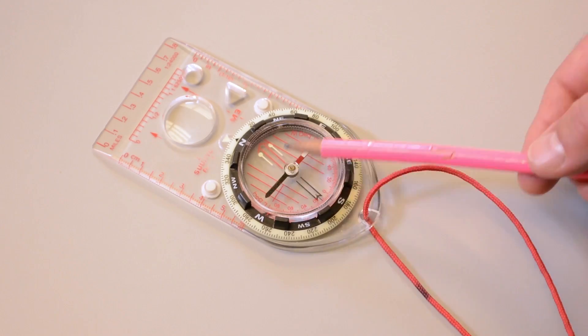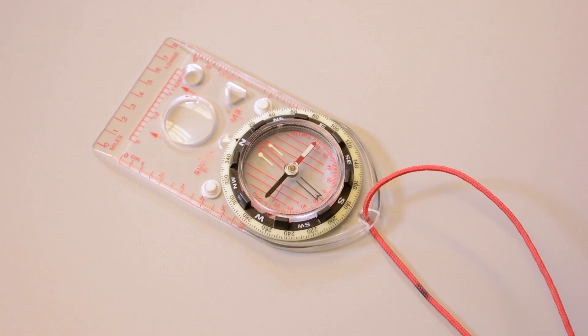Inside the dial are six parallel red lines. These are known as meridian lines and are helpful when you're measuring bearings from a map. More on that in lesson five.